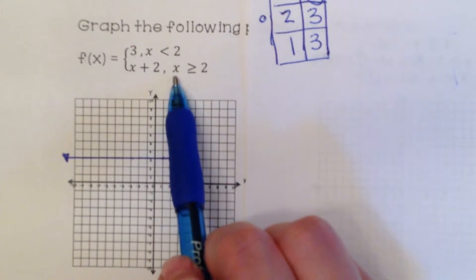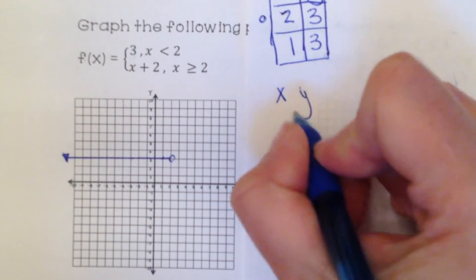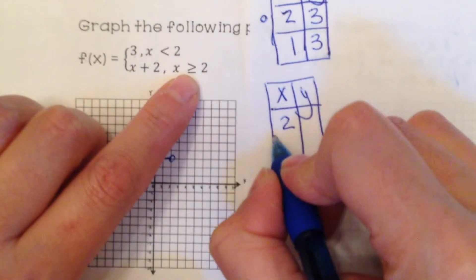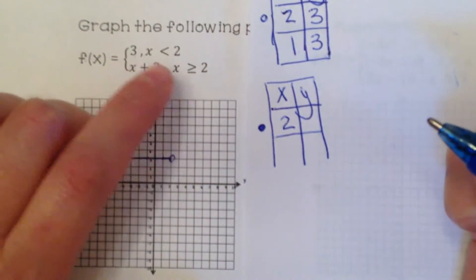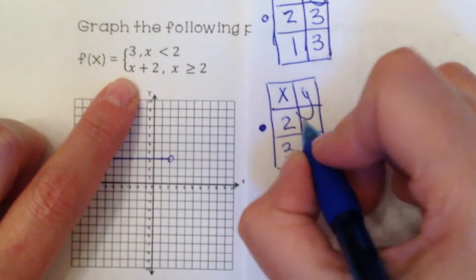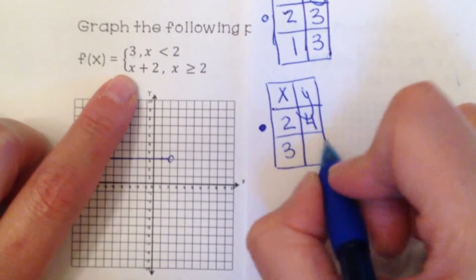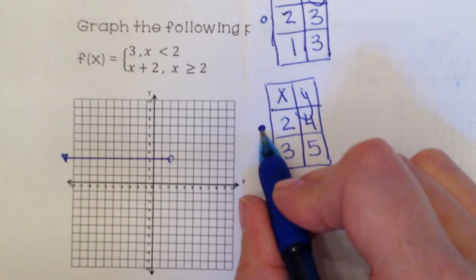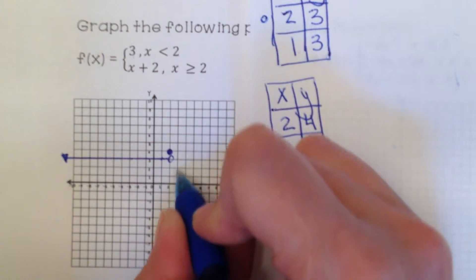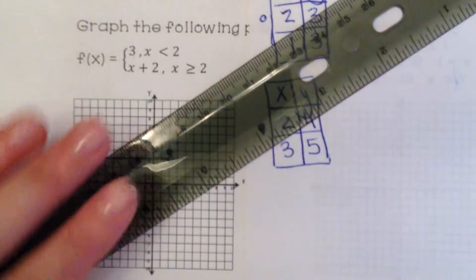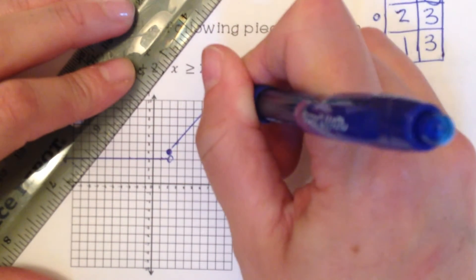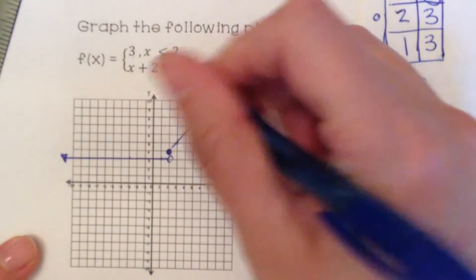The next piece: f of x equals x plus 2 for x values greater than or equal to 2. We include x equals 2 — and since it's greater than or equal to, it's a solid circle. Plugging in 2: 2 plus 2 gives 4. Plugging in 3: 3 plus 2 gives 5. We graph a closed circle at (2, 4) and the point (3, 5), continuing upward. This is the full piecewise graph with two pieces.